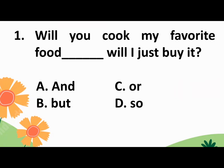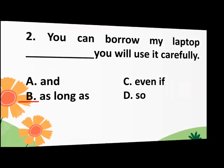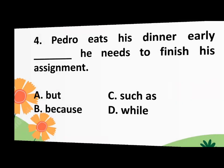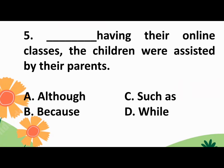It's time to check your answers. Number 1: The correct answer is C. Or. Number 2: The correct answer is Letter B. As long as. Number 3: The correct answer is Letter C. Even if. Number 4: The correct answer is Letter B. Because. And the last number 5: The correct answer is D. While. Did you get all the correct answers? Great job!